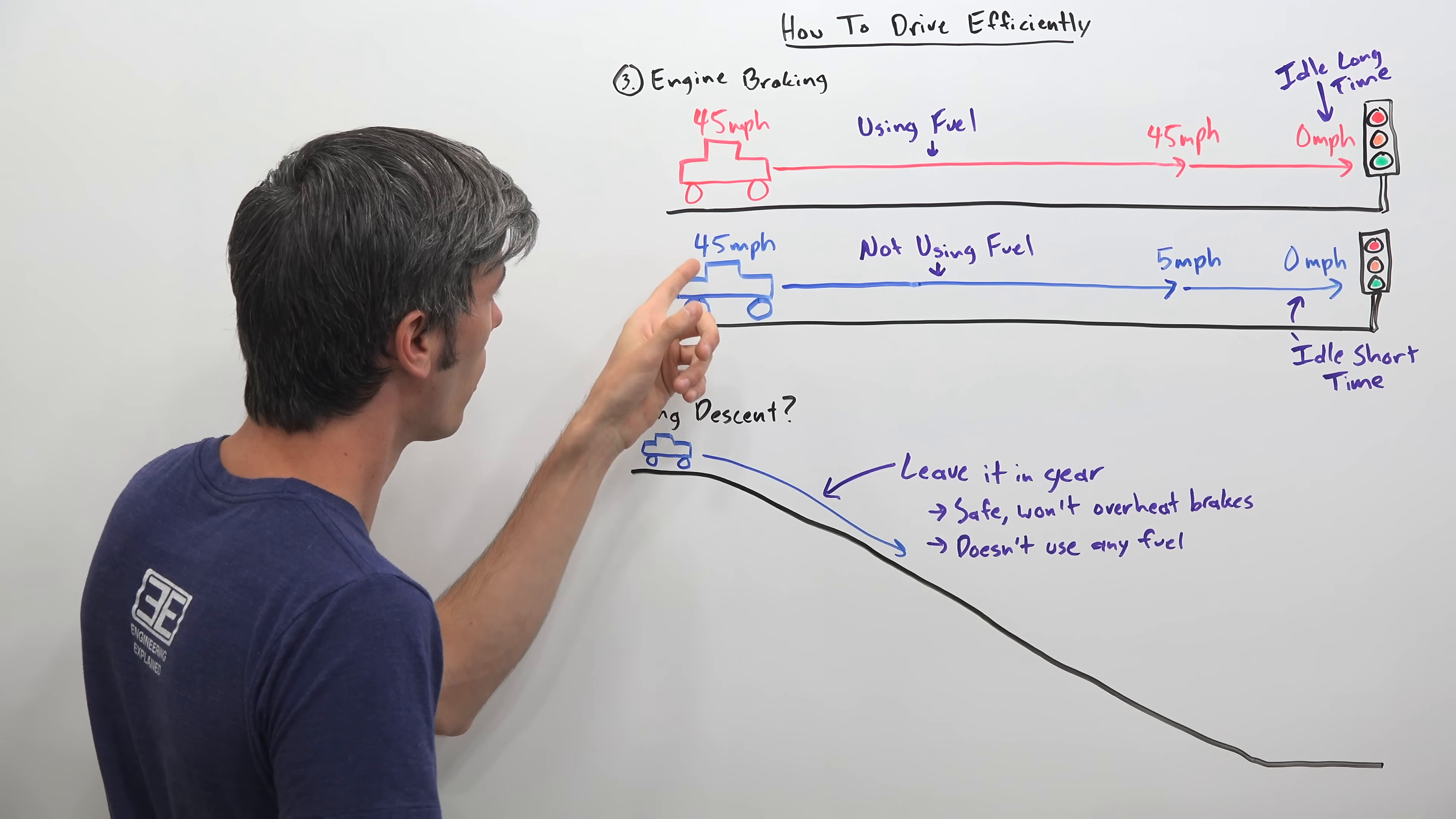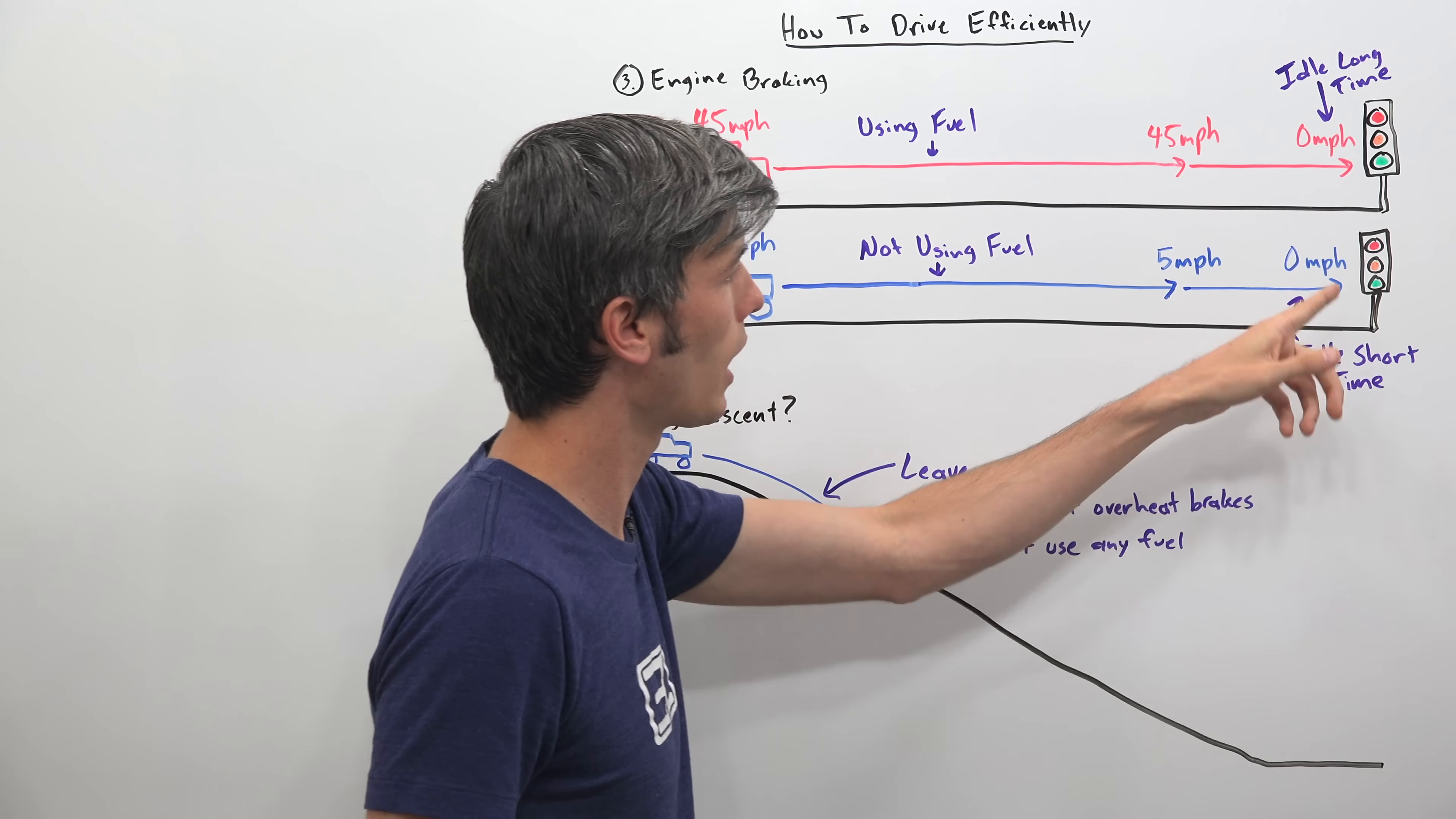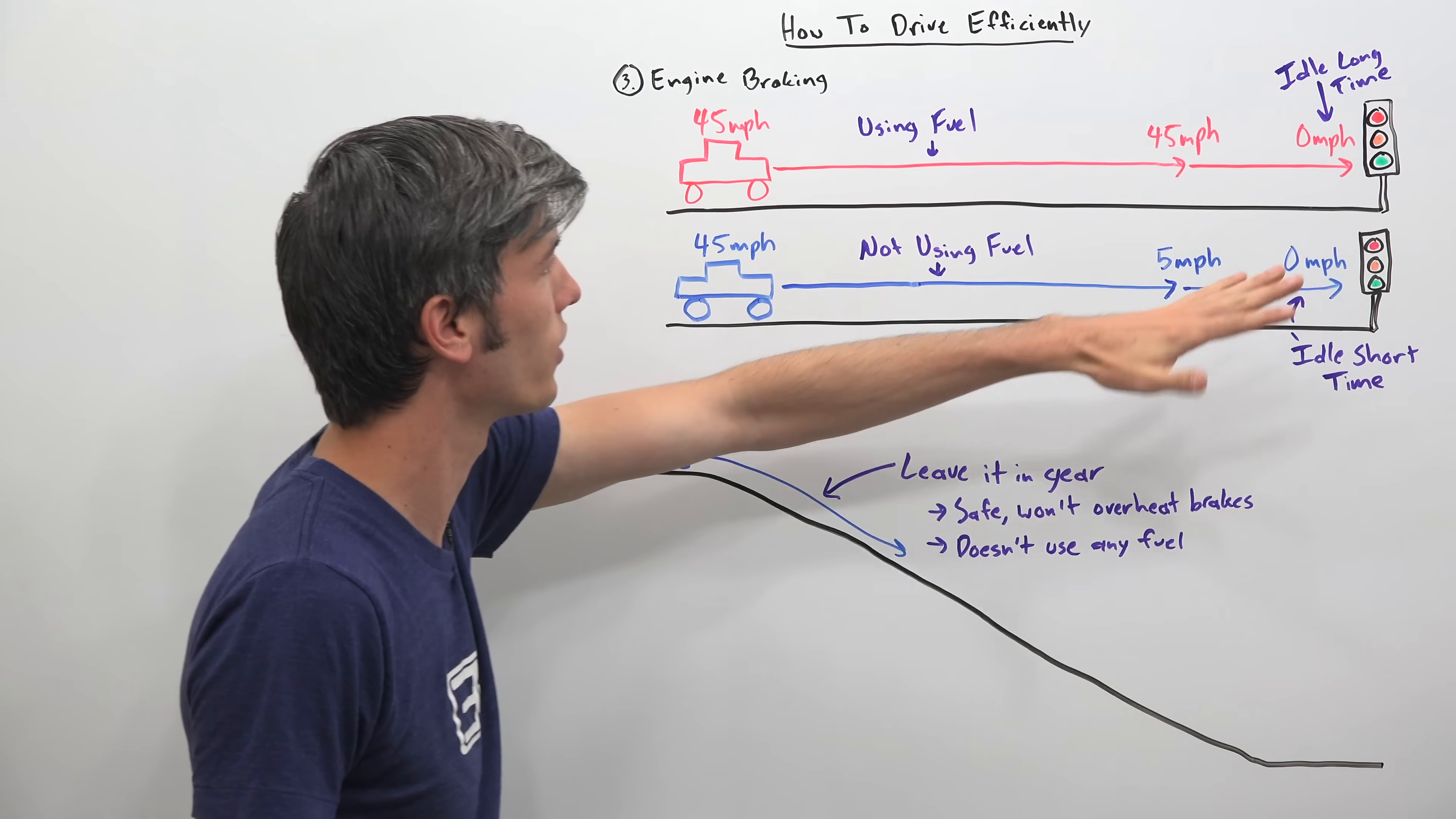So then in our other scenario, our car is driving at 45 miles per hour. We know we're going to have to stop at that light. So we just let off the gas immediately. And so we just coast down to five miles per hour. We're not using any fuel in doing so. And then we get on the brakes and you bring it to a complete stop at the light. And you're not idling for as long of a time because you didn't drive as quickly up to the stoplight. And during that entire time, you weren't using any fuel. So you're only using fuel once you come to the complete stop there and you start idling. Which is less time than you're going to spend idling in this scenario.